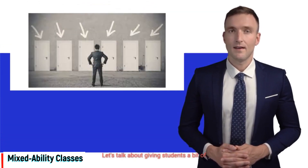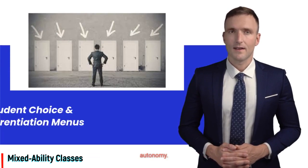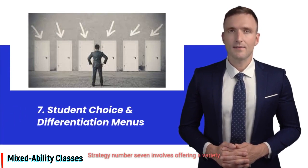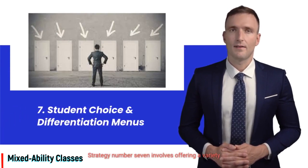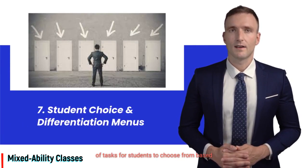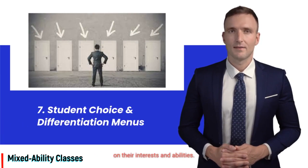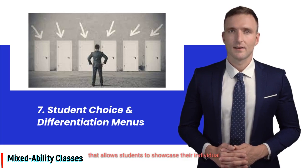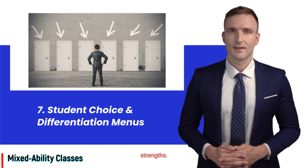Let's talk about giving students a bit of autonomy. Strategy number seven involves offering a variety of tasks for students to choose from based on their interests and abilities. Think of it as a menu of options that allows students to showcase their individual strengths.